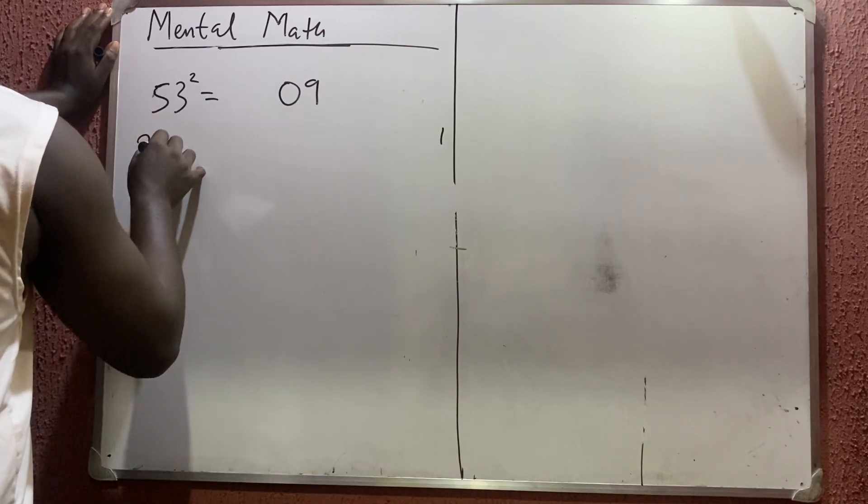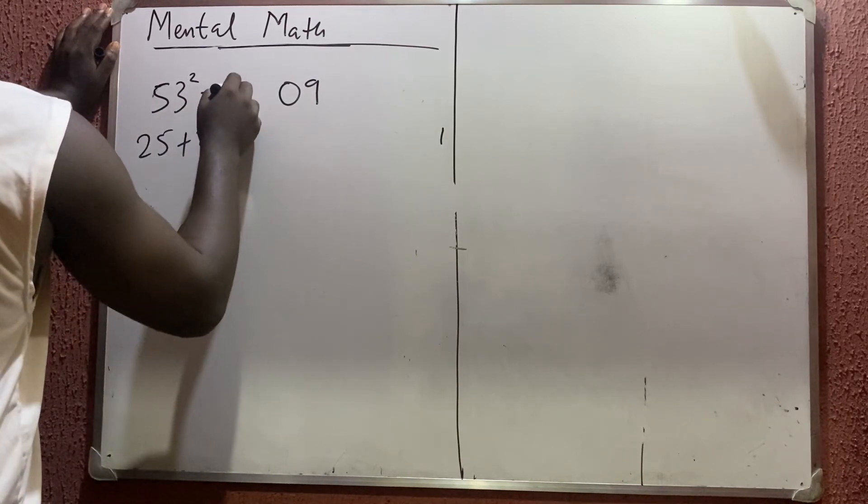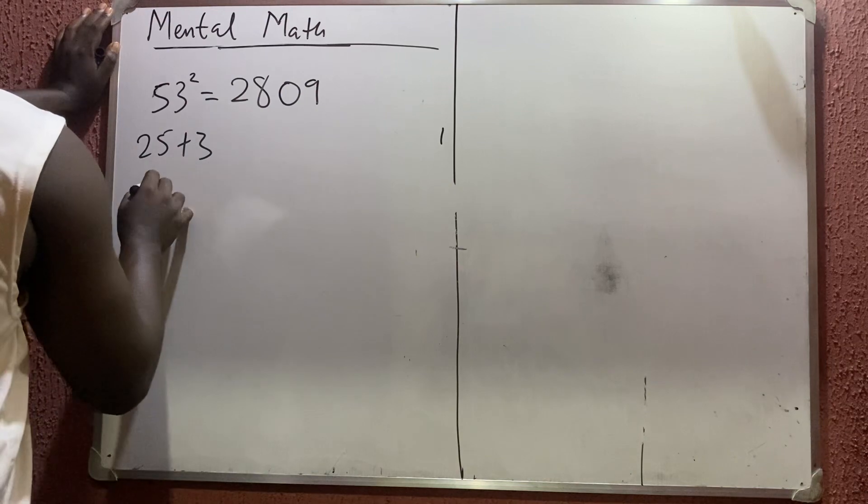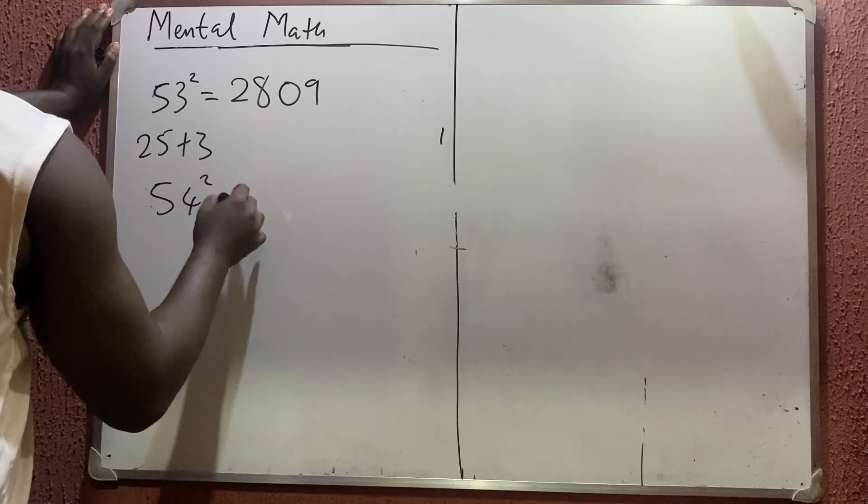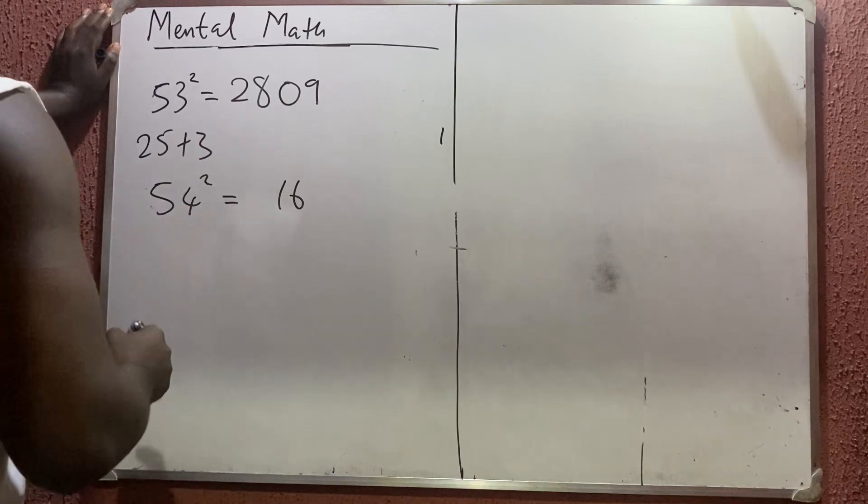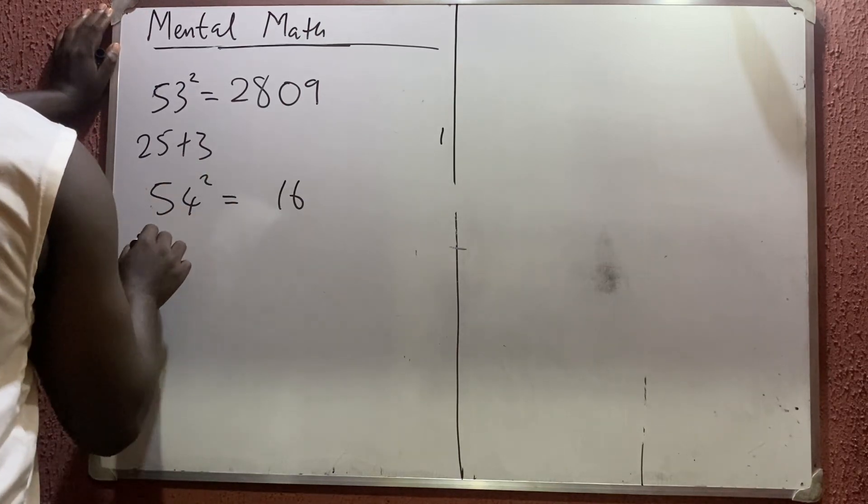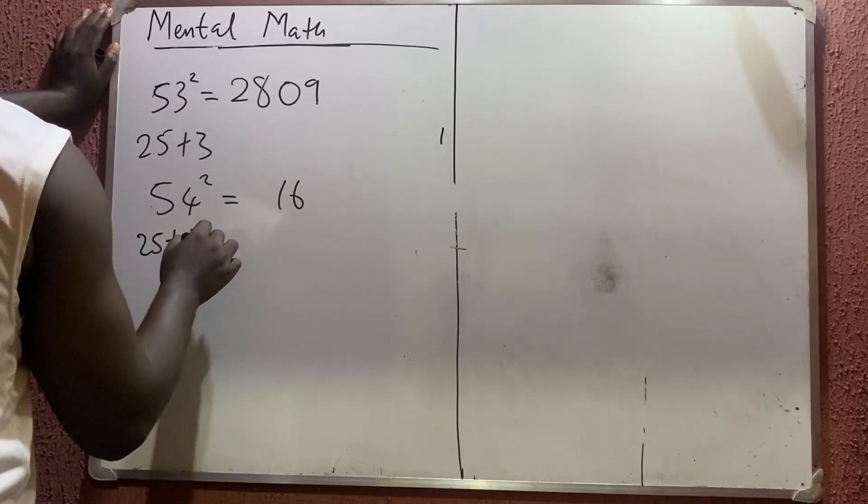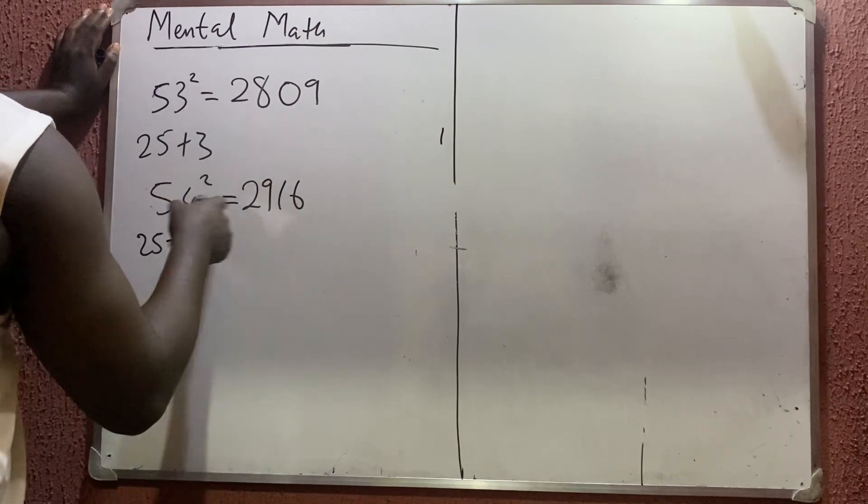54 squared. 4² is 16. 16 is two digits, so you write that 16 the way it is. 5² is 25. 25 plus this 6 I'm seeing here gives you 29. This is the answer.